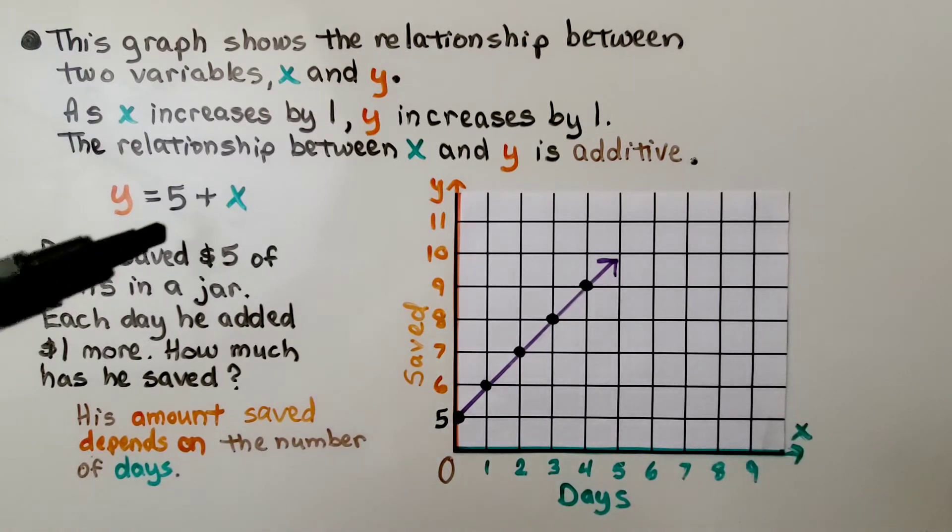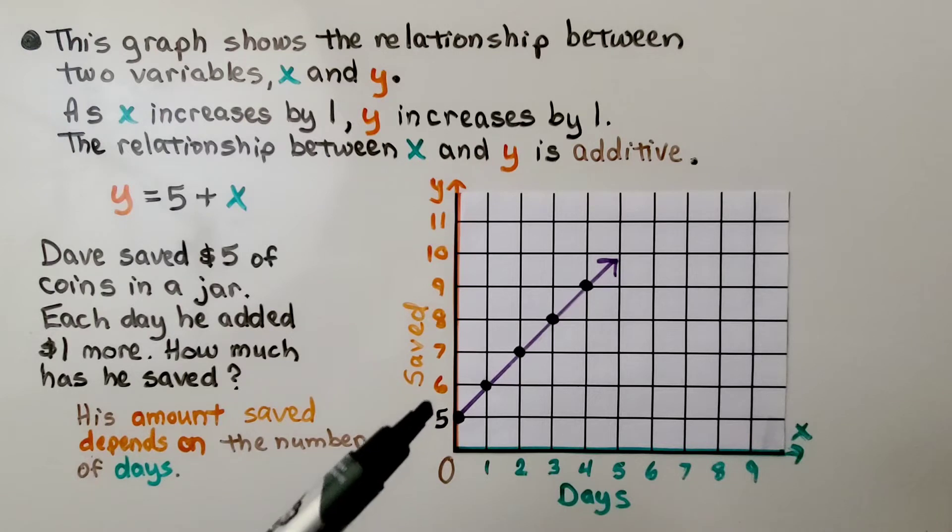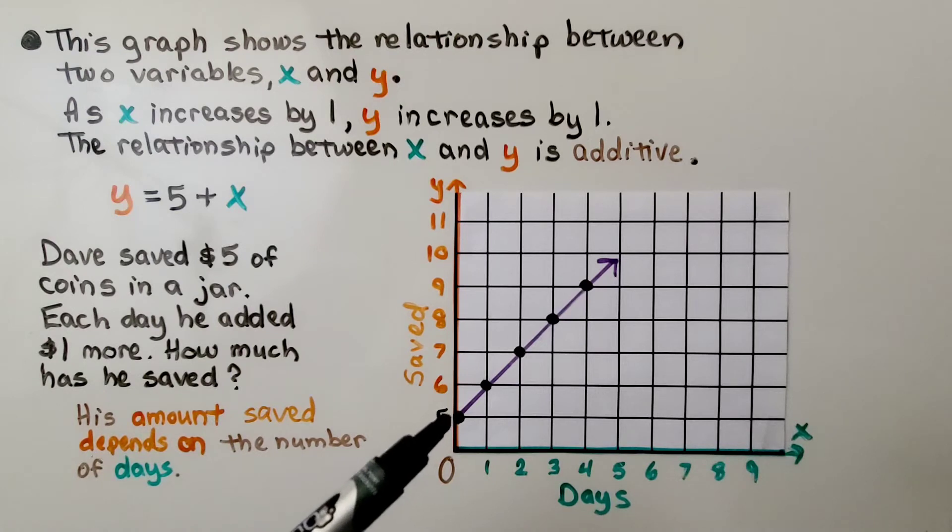Y is dependent on x. And y is equal to 5 plus x, the $5 plus whatever x is for the number of days. Now look at where this graph is starting. It's starting at the 5. It's not going through the origin, it's going through the 5, because he began with $5.